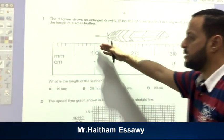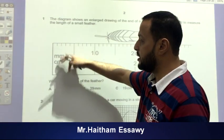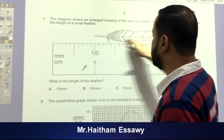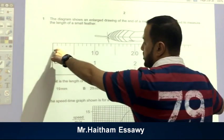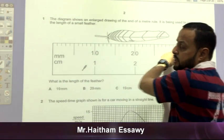As you see, we have two scales: millimeter and centimeter. And this is that small feather. As you see, this is 10, 20, 30. What does it mean?